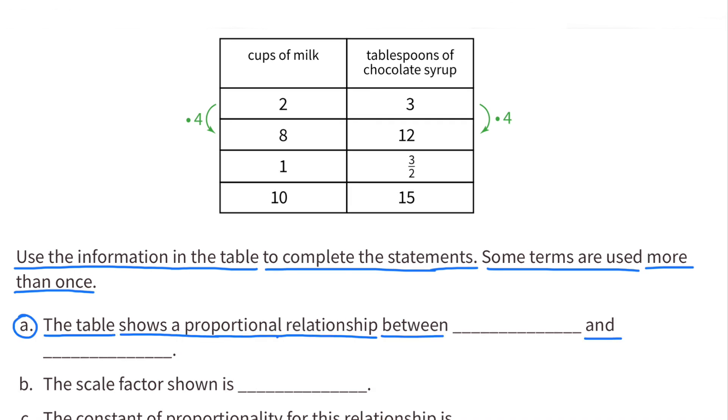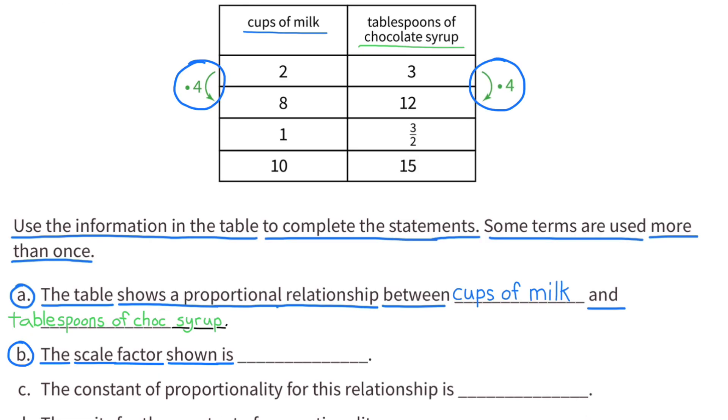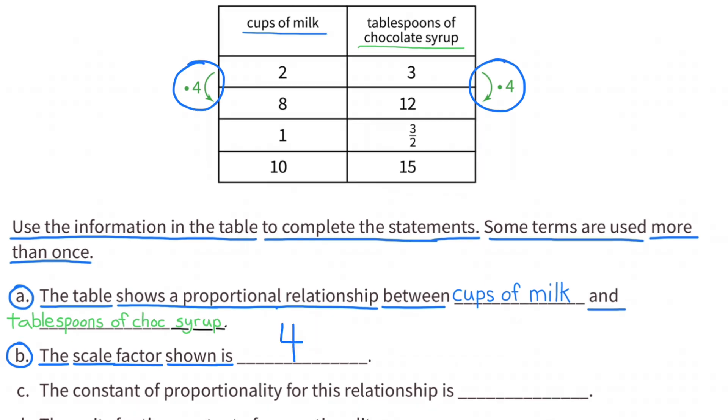The table shows a proportional relationship between cups of milk and tablespoons of chocolate syrup. The scale factor shown is 4, because 2 times 4 is 8, and 3 times 4 is 12.